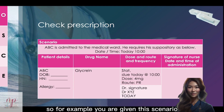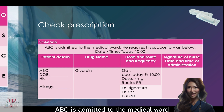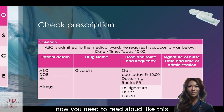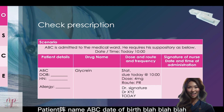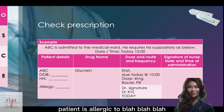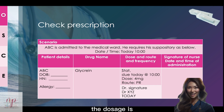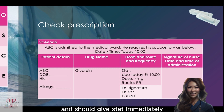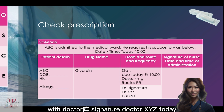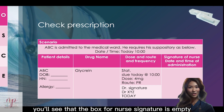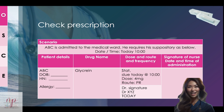For example, you're given this scenario: ABC is admitted to the medical ward and requires a suppository. Date is today, time is 10 o'clock. You read aloud: patient name ABC, date of birth, patient number, patient is allergic to [X], drug name is glycerin, dosage is 4mg, route is per rectal, to be given immediately at 10 o'clock, with doctor's signature XYZ today. The box for nurse signature is empty, so the medication has not yet been given — it is time to give it now.